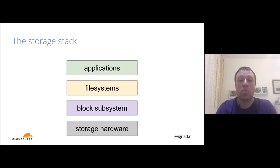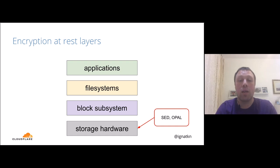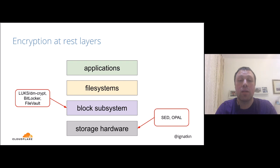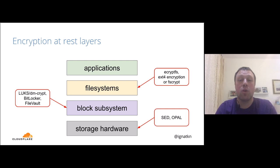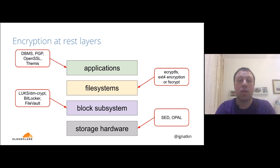First, you can buy self-encrypting disks — there is a standard called Opal — and those disks will transparently encrypt the data for you. Second, you can implement encryption in the block subsystem of the OS. Known examples are LUKS and dm-crypt, which will be the main topic of today's presentation. We also have BitLocker on Windows and FileVault on macOS. Then we can encrypt data at the filesystem layer — examples include eCryptFS and ext4 encryption, now developed into a module called fscrypt. Finally, you can do encryption in the application layer.